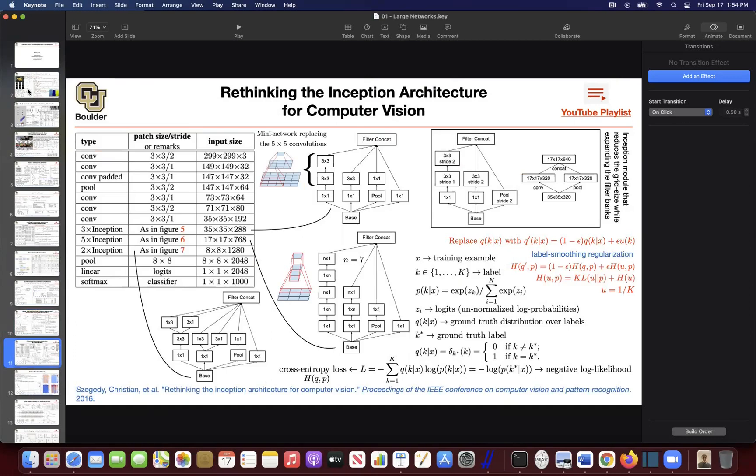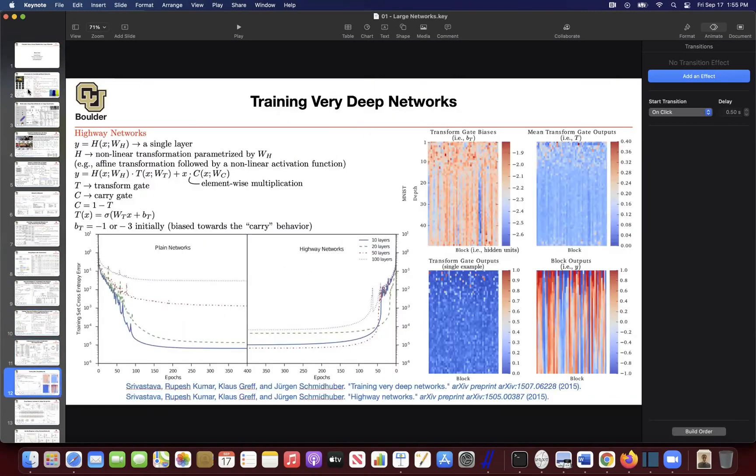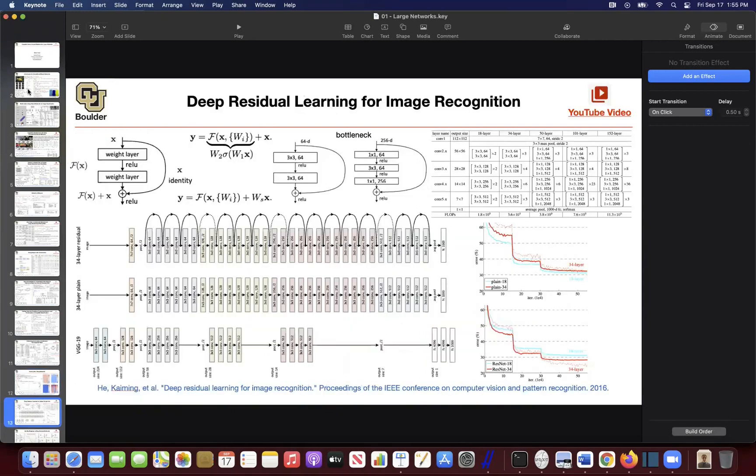We kept introducing new concepts when it comes to convolutions and how to combine them together. There was this idea of trying to go deeper at the same time being able to train your neural networks. We borrowed some ideas from recurrent neural networks and gating mechanisms.